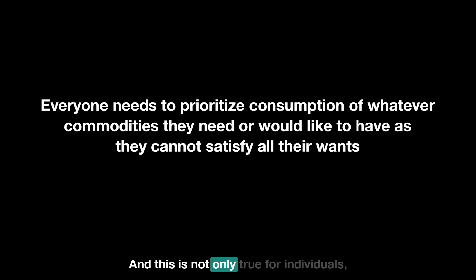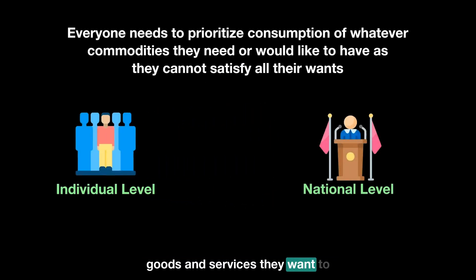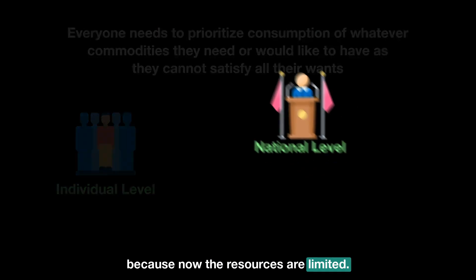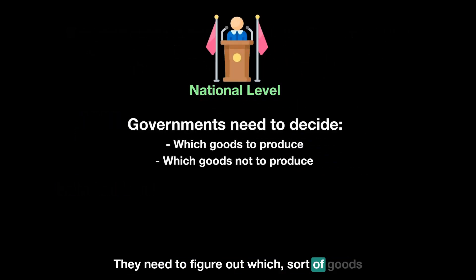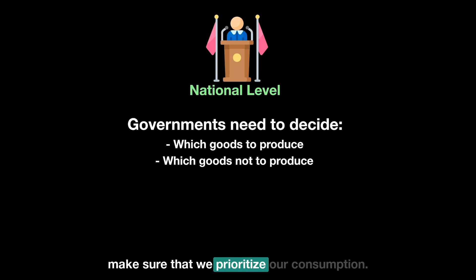Everyone needs to prioritize their consumption of whatever commodities they need or would like to have, as they cannot satisfy all their wants. This is not only true for individuals but also at the national level. Each individual must choose which goods and services to consume, and the government must also decide which sorts of goods to produce and which not to produce.